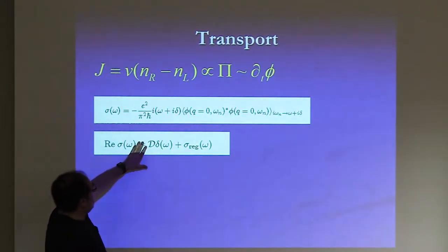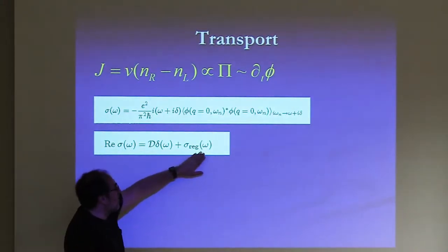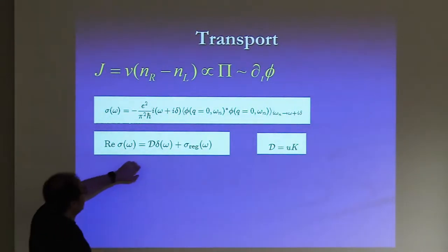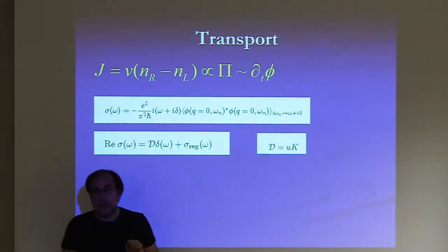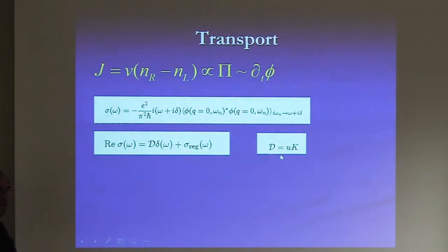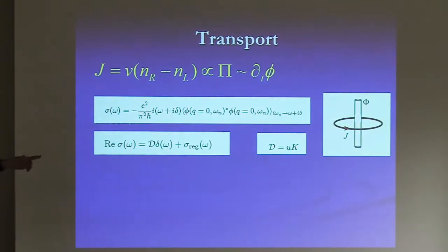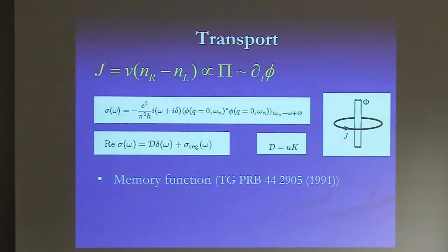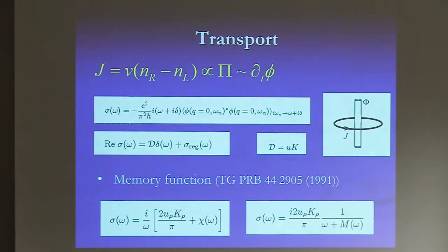You can write the conductivity as a Drude peak with a certain weight, plus a regular part that tends to a finite value when omega goes to zero. Using the bosonization technology, you can immediately show that the weight of the Drude peak at zero temperature is just u times K. So if you have a Luttinger liquid, you always have a delta function at omega=0 with weight u*K — not saying the system is a superfluid, just that it conducts perfectly. There is also a method introduced by Goetze and Woelfle called the memory function.